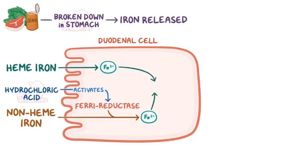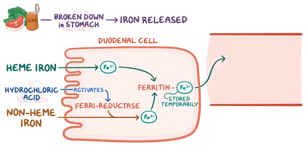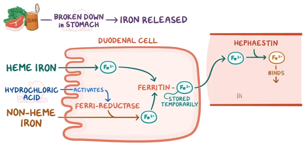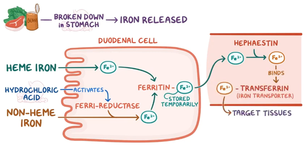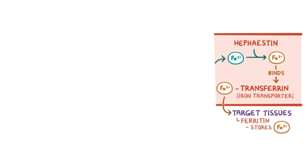Fe2+ molecules then bind to a protein in the duodenal cells called ferritin, which temporarily stores the iron. When iron is needed in the body, some Fe2+ molecules are released from ferritin and transported into the blood, where the enzyme hephastin converts them back to the Fe3+ state. Fe3+ molecules then bind to an iron transport protein called transferrin, which carries iron to various target tissues and releases them there. Fe3+ enters these various tissue cells, where there's more ferritin that can store them for future use.